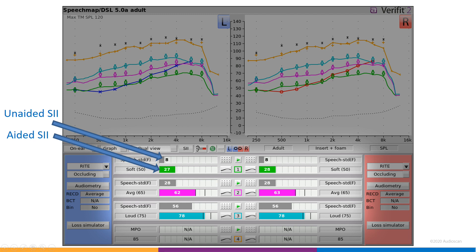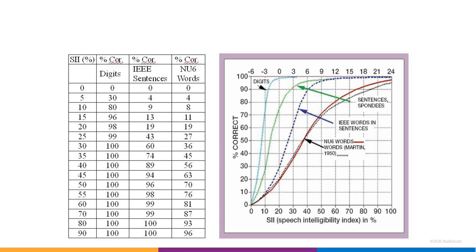SII can be a helpful tool, especially when counseling on the potential benefit of amplification, as it can be used to predict performance on tests of speech understanding. When explaining these values to a client or family member, it's often useful to have a graph showing how they relate to predicted speech intelligibility. This graph, which is found in all AudioScan help menus, shows SII along the x-axis and several curves which show how SII can predict percent correct when using various types of speech materials.